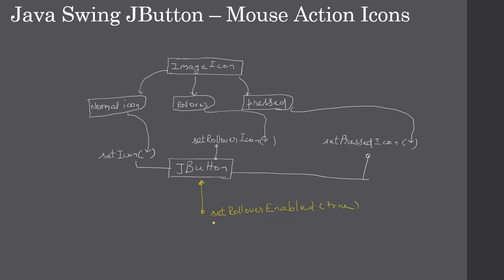For the rollover to work, we need to call one important method: setRolloverEnabled and pass boolean true. Once rollover is enabled, the Swing framework will take care of enabling the icon animation whenever a mouse action takes place on this button.